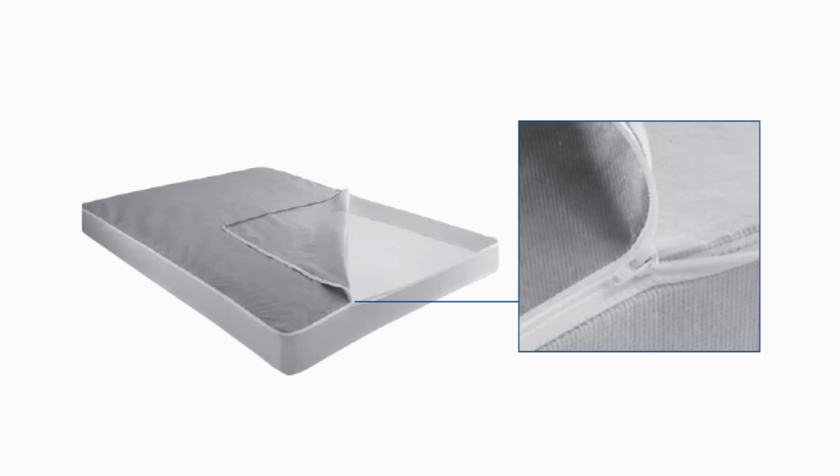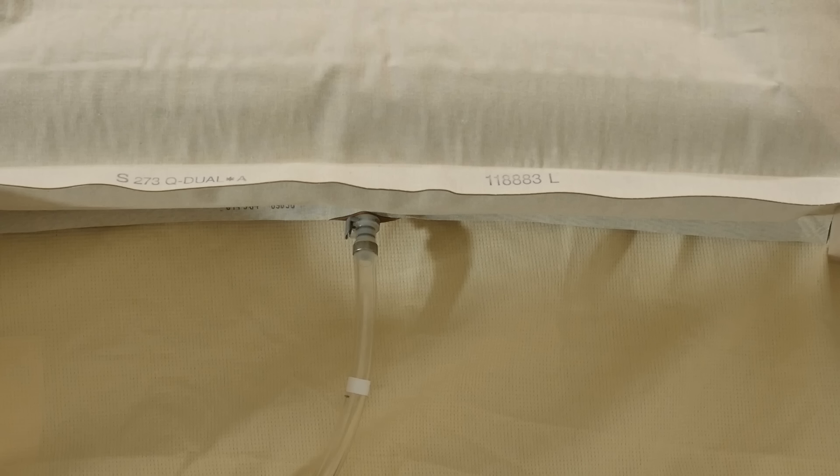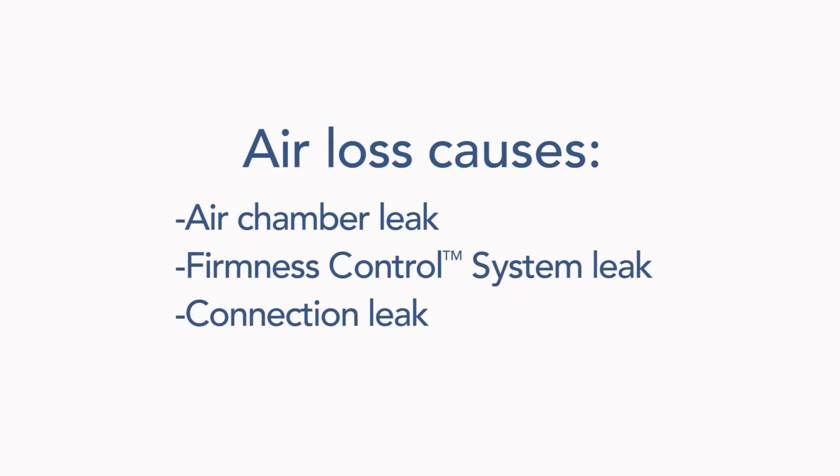Memory foam beds have an inner cover panel under the memory foam support layer. Unzip and remove the inner cover panel to access the rest of the bed. The air system connections are located at the head of the bed. Air loss can be caused by a leak in the air chamber, the firmness control system, or the air system connections.